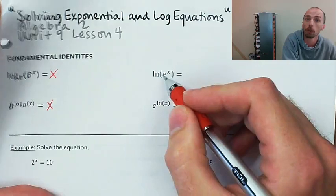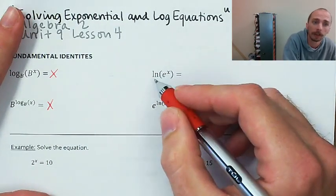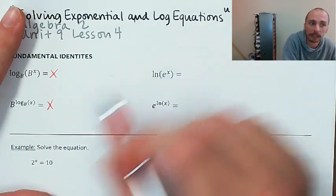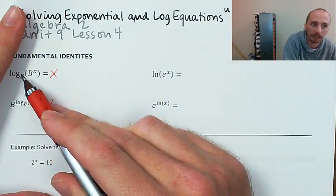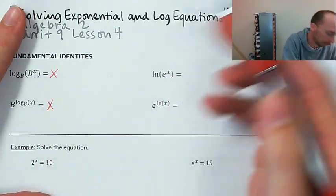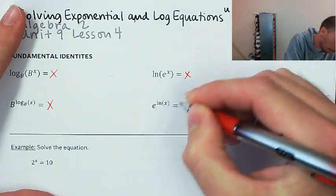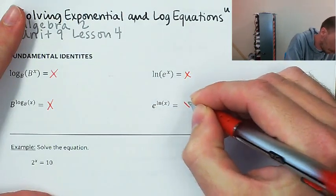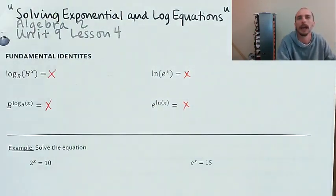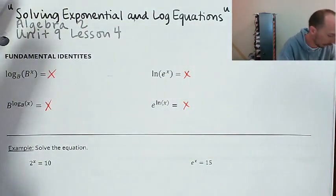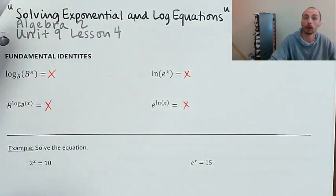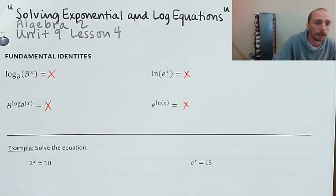And then b to the log base b of x is also just going to equal x. Log base b of x is the exponent we put on b to get x, so if we put that exponent on b we get x. It's the same thing with natural log: ln(e^x) = x and e^(ln x) = x. All of these just come back to x.